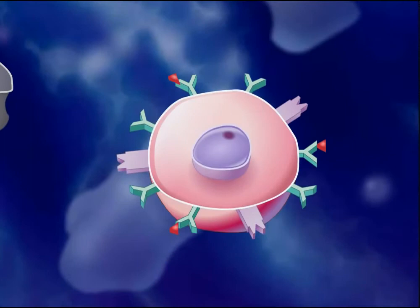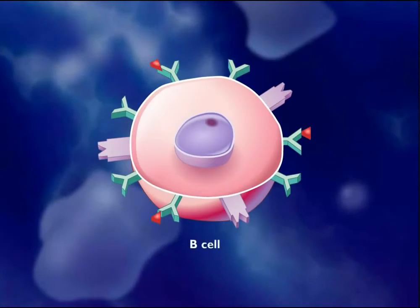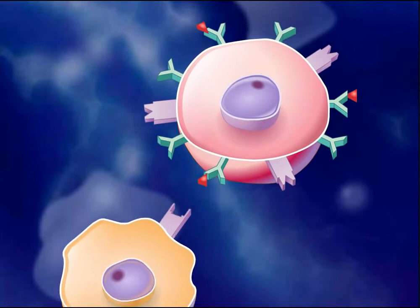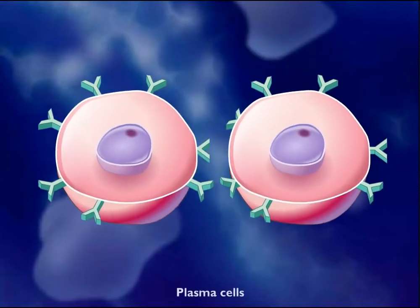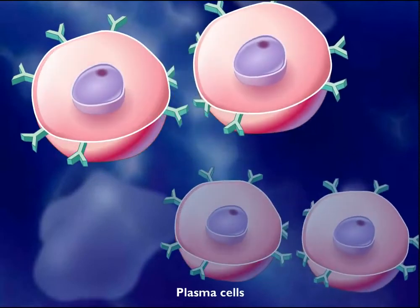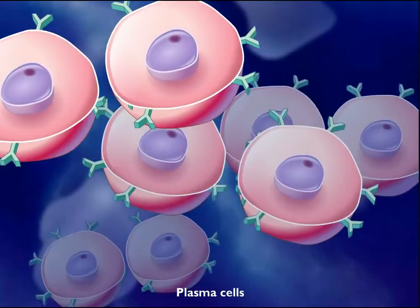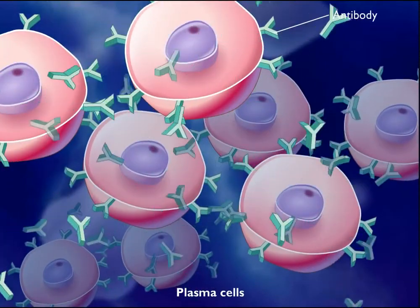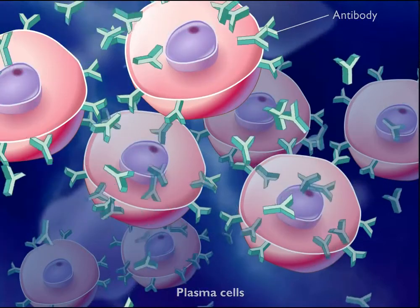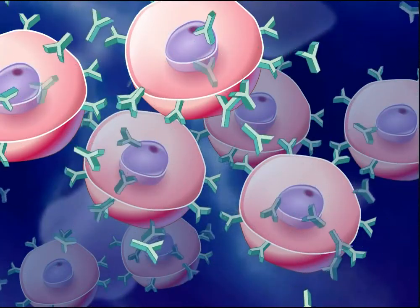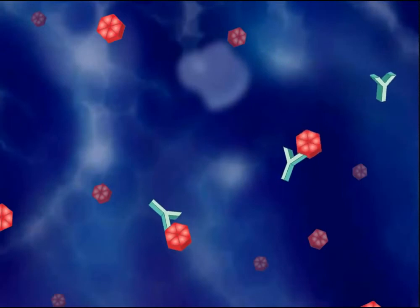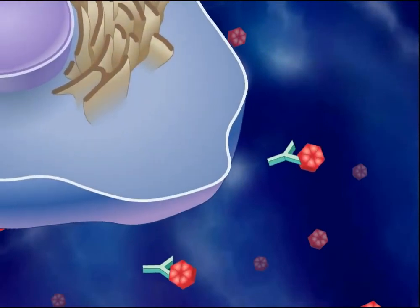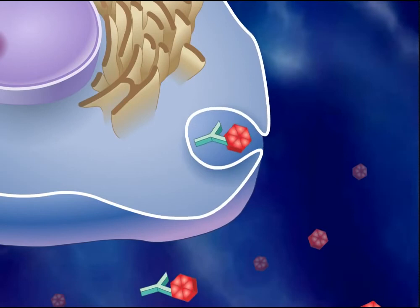B-cells also come in millions of different types, each able to recognize a particular antigen. When B-cells become activated by T-helper cells, they differentiate into plasma cells. These plasma cells become antibody-producing factories, flooding the bloodstream with antibodies that can bind to the antigen involved in this infection. Antibodies bind to the antigens on the surfaces of the pathogens, marking them for destruction by macrophages.